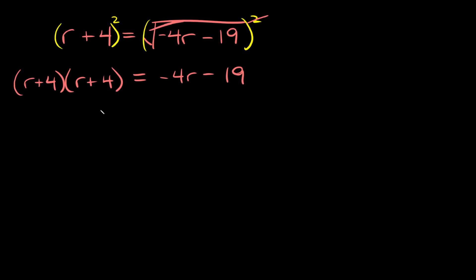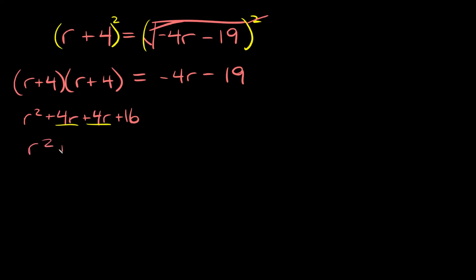To simplify this we need to FOIL — that stands for first, outer, inner, last. First: r times r is r squared. Outer: r times positive 4 is positive 4r. Inner: 4 times r is positive 4r. Last: 4 times 4 is positive 16. Combining like terms, 4r plus 4r is 8r, so we get r squared plus 8r plus 16.